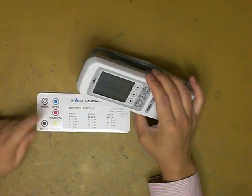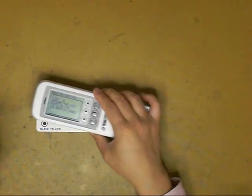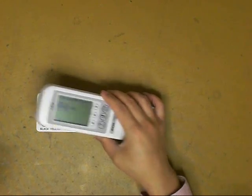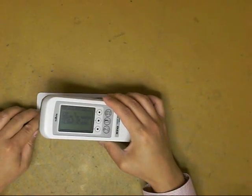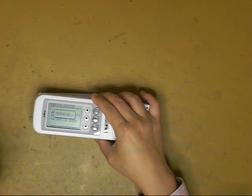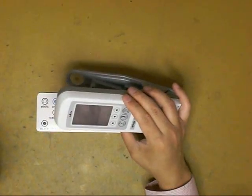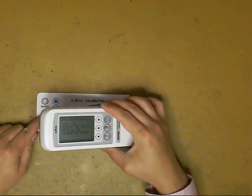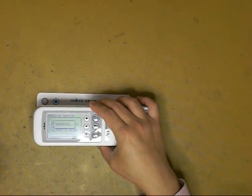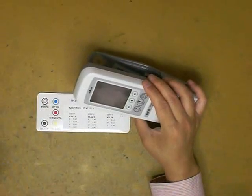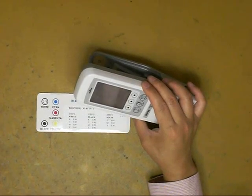Step six: measure the cyan patch, the magenta patch, and finally the yellow patch. Calibration completed. The machine is now ready to be used. Very simple.